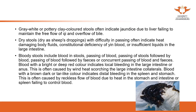Bloody stool can be stool with red-colored blood that you can see, or it can be a tar-like color. Tar-like stool also indicates internal bleeding and is an indication of bleeding in the spleen or stomach. We need to be careful — although we don't use acupuncture for this, we can use herbal methods, or in severe conditions refer the patient to hospital. Keep in mind that black or tar-like stool indicates internal bleeding.